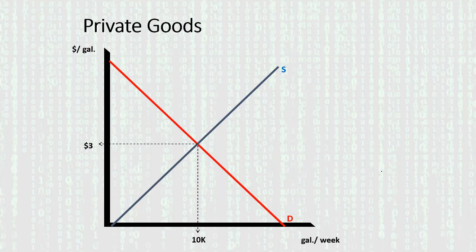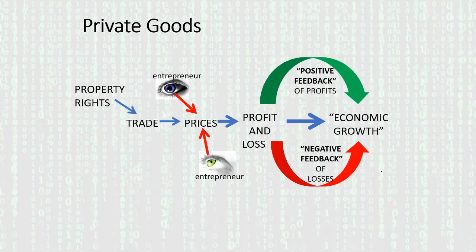The incentives for producers are to produce more of the good and find ways to cut costs to increase profits. So the price mechanism is fully in place. The market process — with its institutional basis and property rights, entrepreneurs looking at prices and finding profit opportunities, and then the feedback mechanisms of positive feedback from profits and negative feedback from losses — is fully applicable with respect to private goods.